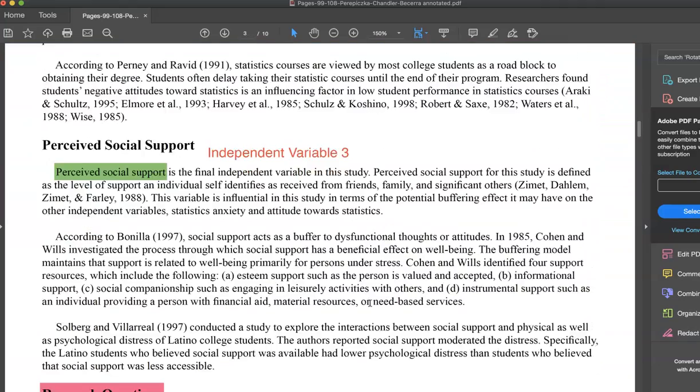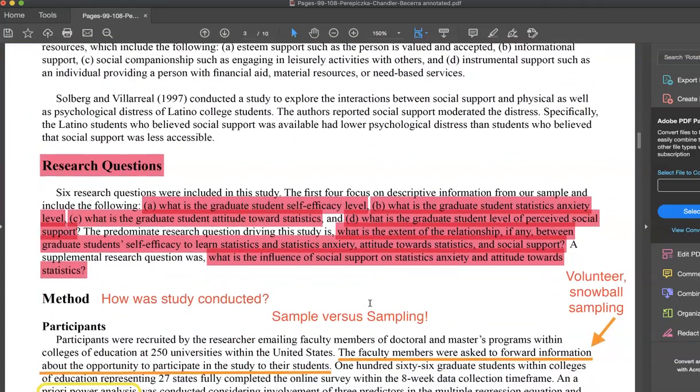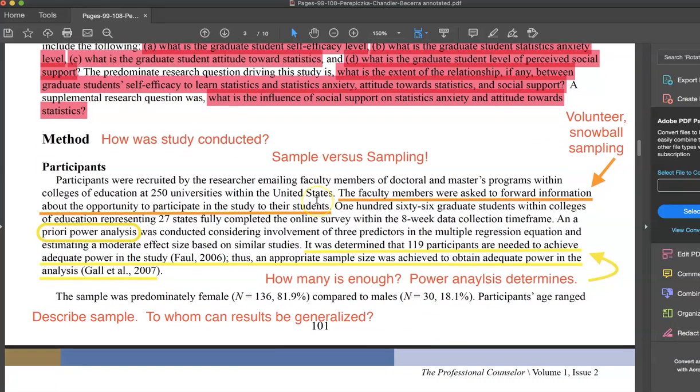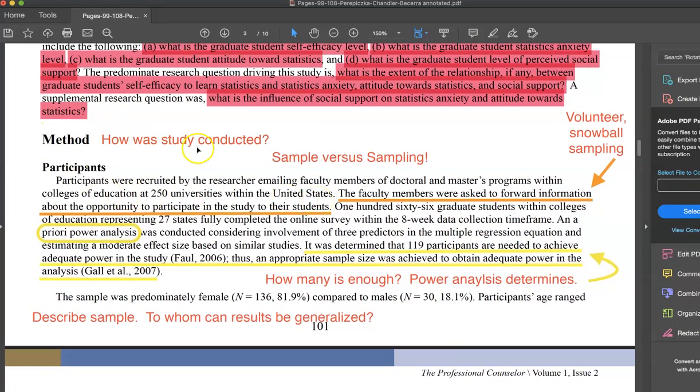So they go on through and do the rest of the independent variables. Then they introduce the research questions, which are the purpose statement just reworded. But in this case, they're looking at the self-efficacy, they're looking at each one of the independent variables, and then how do all of these independent variables potentially predict self-efficacy? Then they go on to explain the method, how the study was conducted.